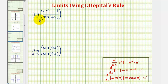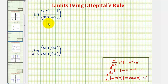We want to find the limit as x approaches zero of the quantity e raised to the power of two x minus one, divided by sine four x. Notice as x approaches zero, both the numerator and denominator approach zero, and therefore we say this limit has the indeterminate form of zero divided by zero.